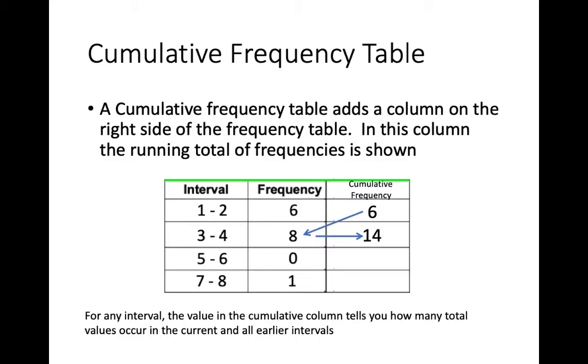Once again, we'll add 0 from the third interval to 14 and see that there are 14 values in the first three intervals. And then if we add the 1, we can see that our total data set should have 15 values in it.